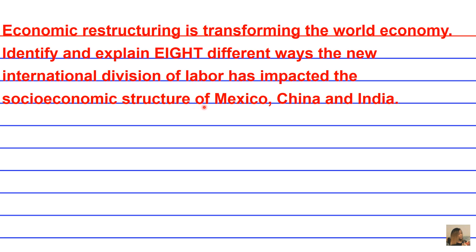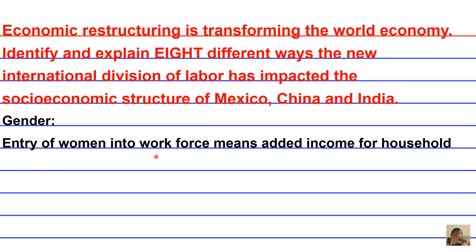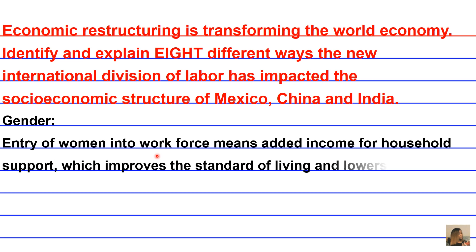A second way the International Division of Labor has impacted the socioeconomic structures of developing nations like China, India, and Mexico is through impacts on gender — specifically the entry of women into the workforce, which means added income for the entire household. This provides more support, improves the standard of living, and lowers the population growth rate.